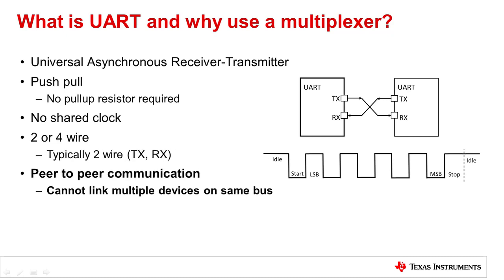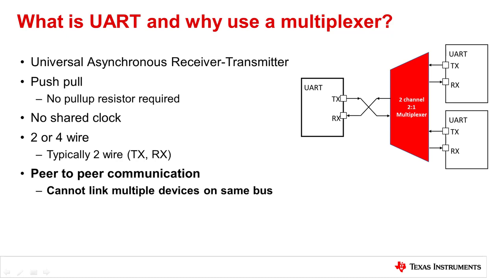Unlike communication protocols such as SPI or I2C where multiple devices can be incorporated on the same bus, UART communication is peer-to-peer, meaning that there is no real primary or secondary device. Rather, typical UART applications consist of two interlinked devices that can send and receive information between each other. Therefore, to accommodate a system that may require multiple devices to communicate with a single primary device, a multiplexer can be used.